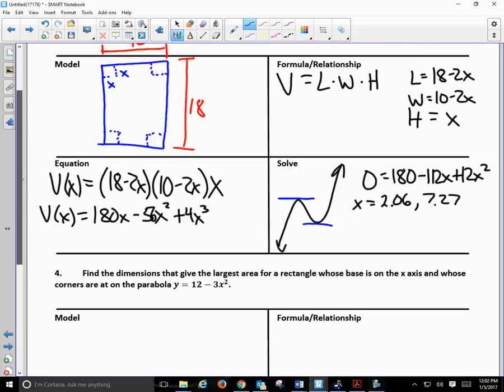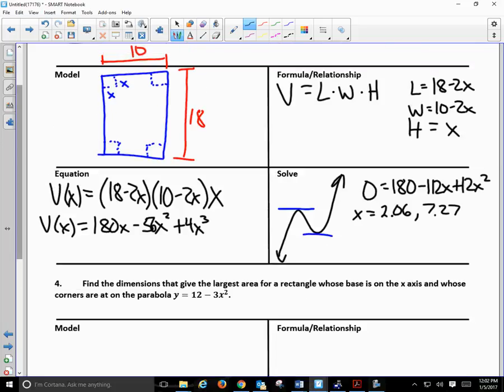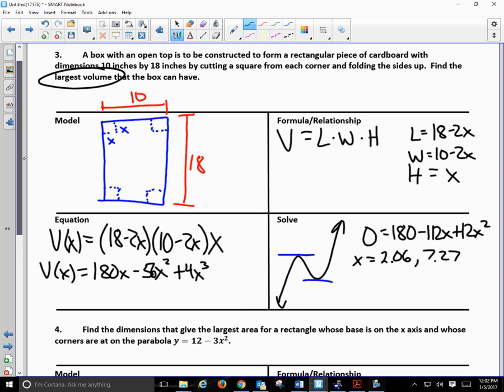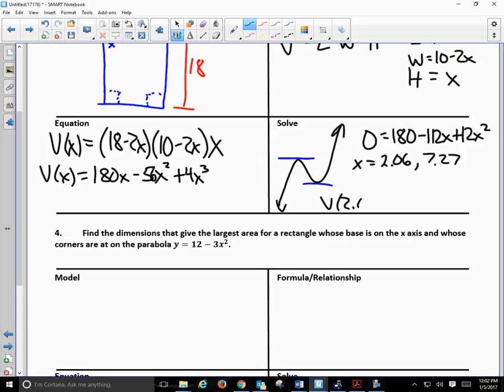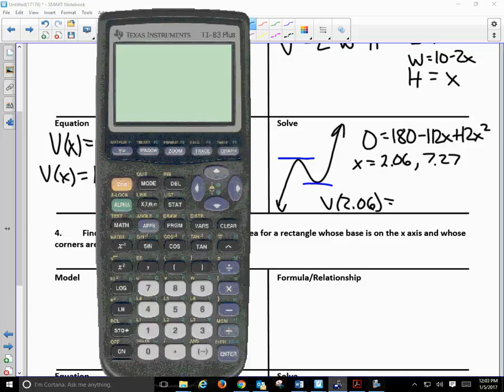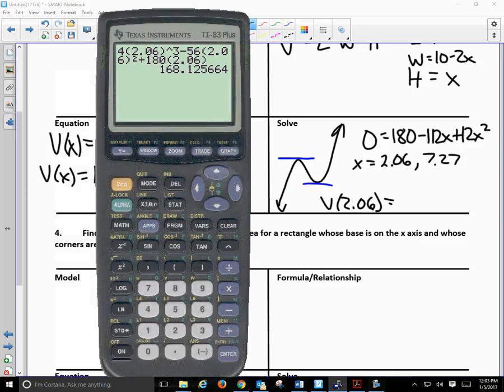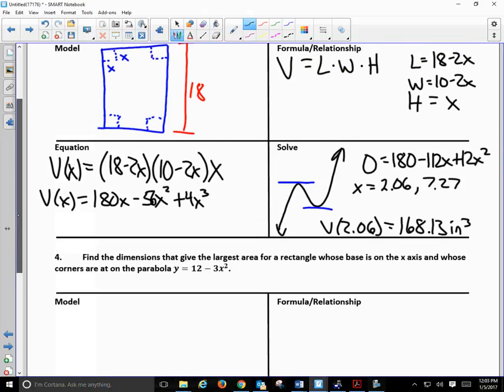So we have 2.06. That's x. Does that answer the question? No. What is the question? How will we find the largest volume? We'll find out v of 2.06. So we're going to plug 2.06 into this. I plugged in the 2.06 earlier in the class. And you can see I came up with 168.13. And what's my label? Inches cubed. So again, in this situation, we weren't looking for the dimensions. Could we find the dimensions? Yeah, no big deal.